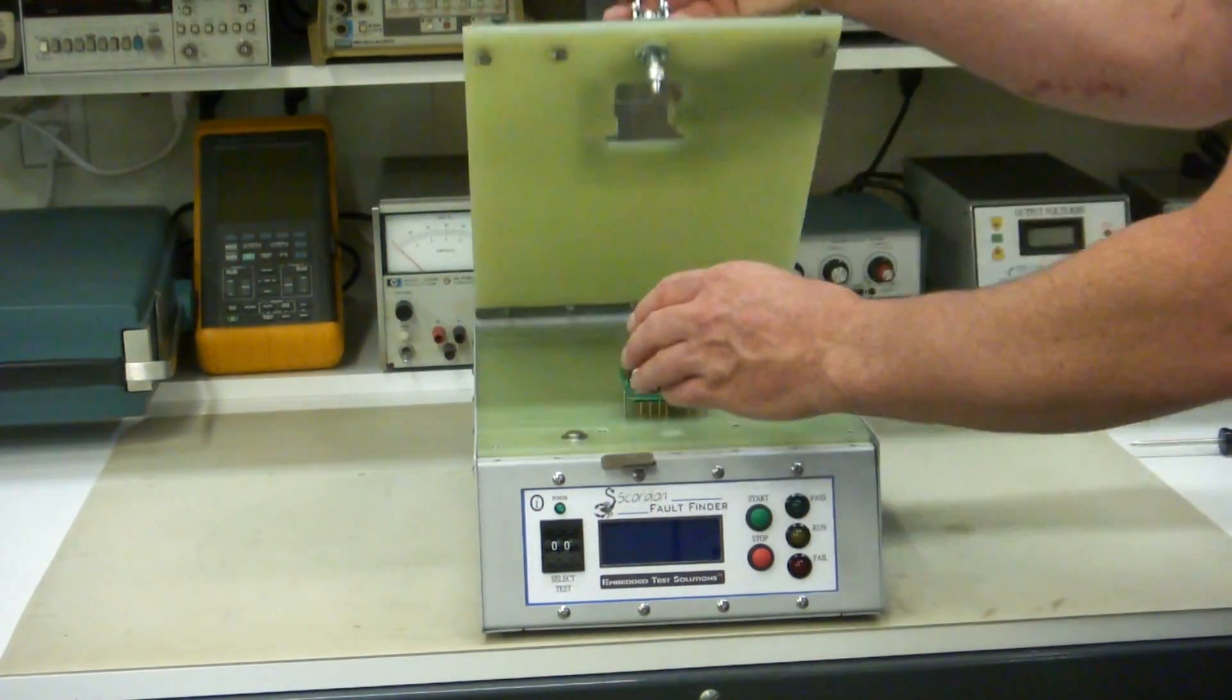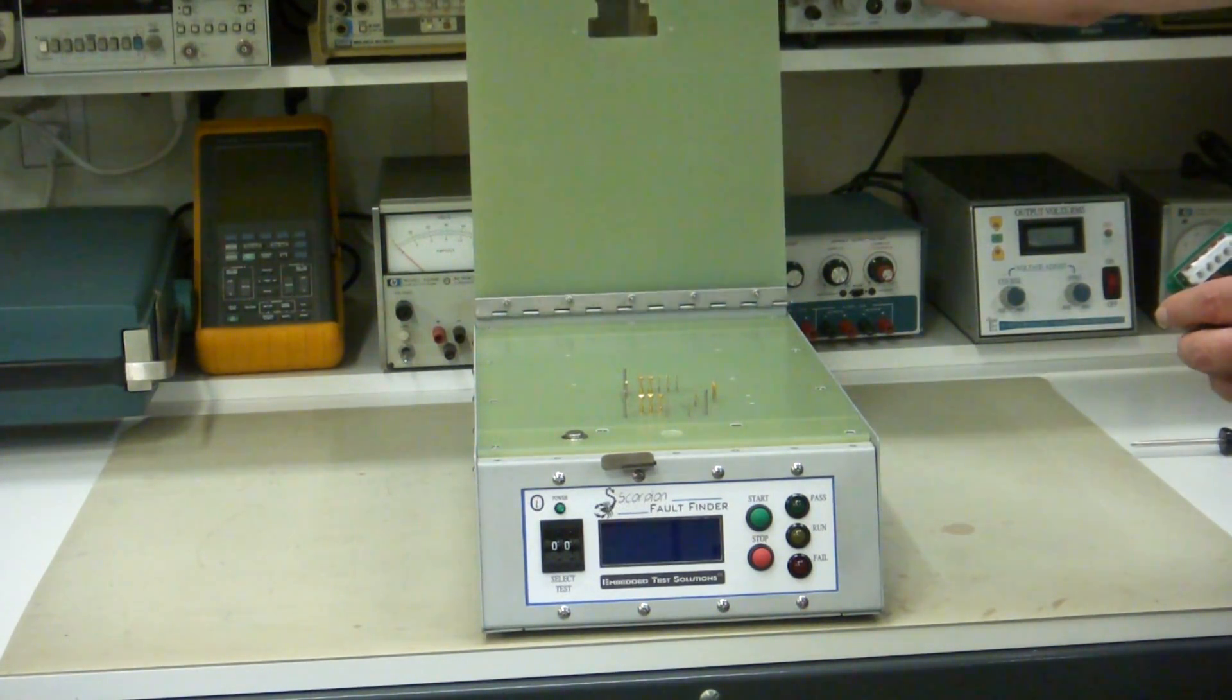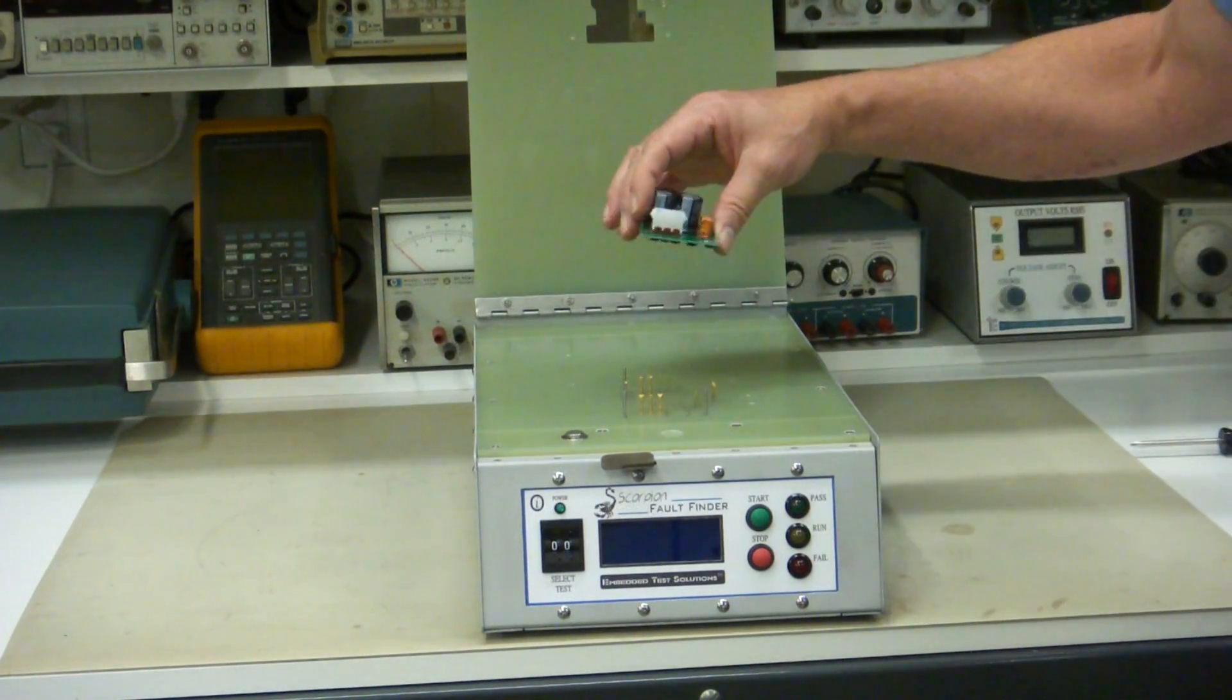Now the way this works is this is a double sided fixture. But these fixtures are available in both single sided and double sided. This just happens to be a double sided, and it happens to have some big high current 20 amp probes right there.